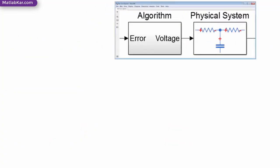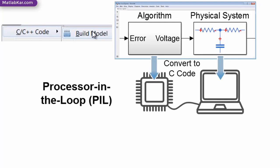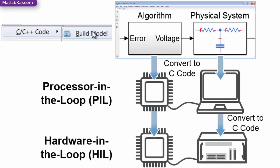SimScape Electronics models can also be converted to C code. This enables them to support testing of embedded software in configurations such as processor-in-the-loop and hardware-in-the-loop testing, which is much safer and more efficient than testing on hardware prototypes.